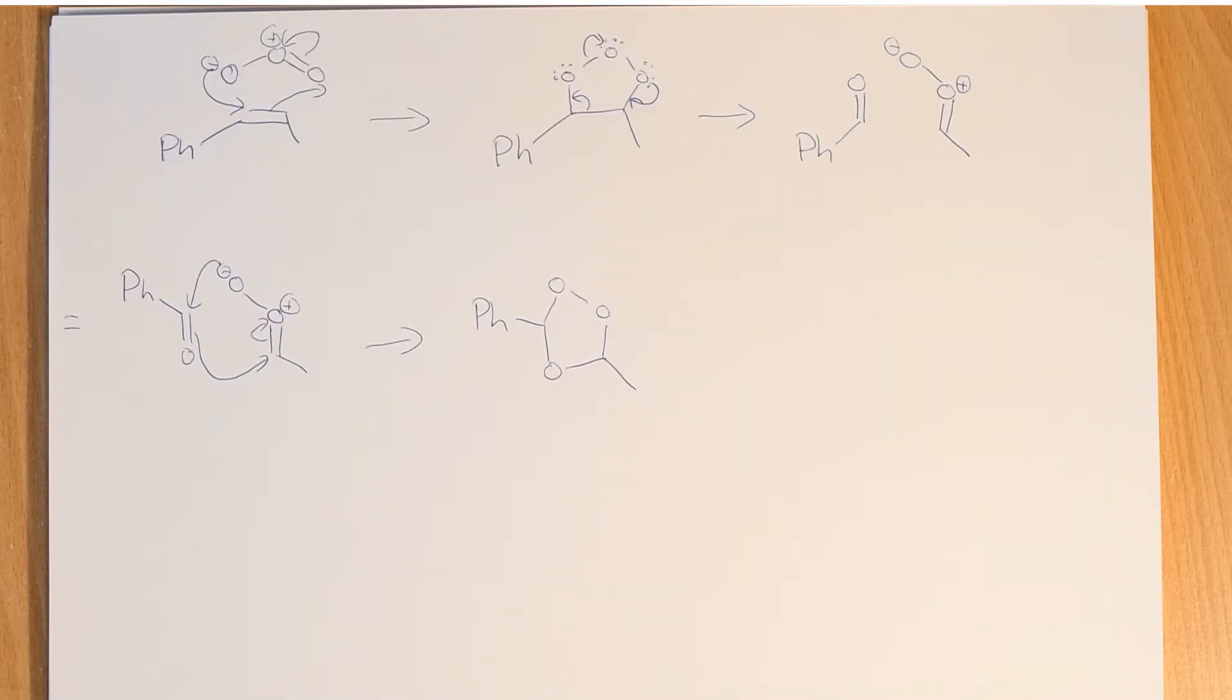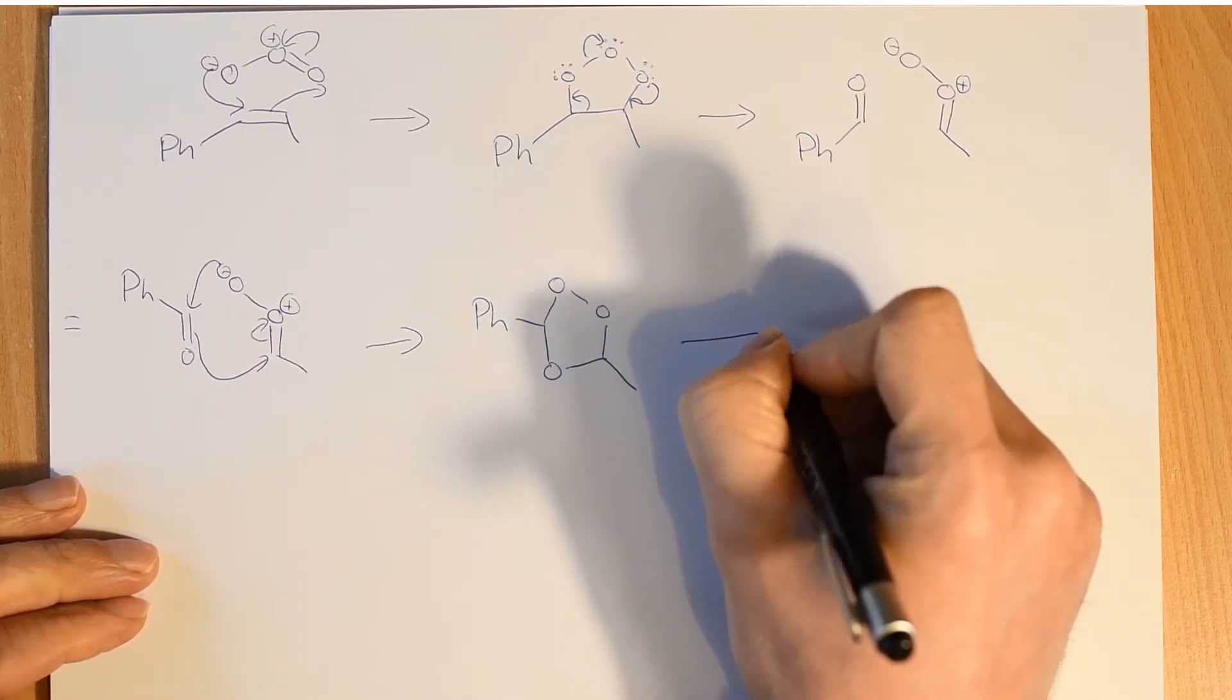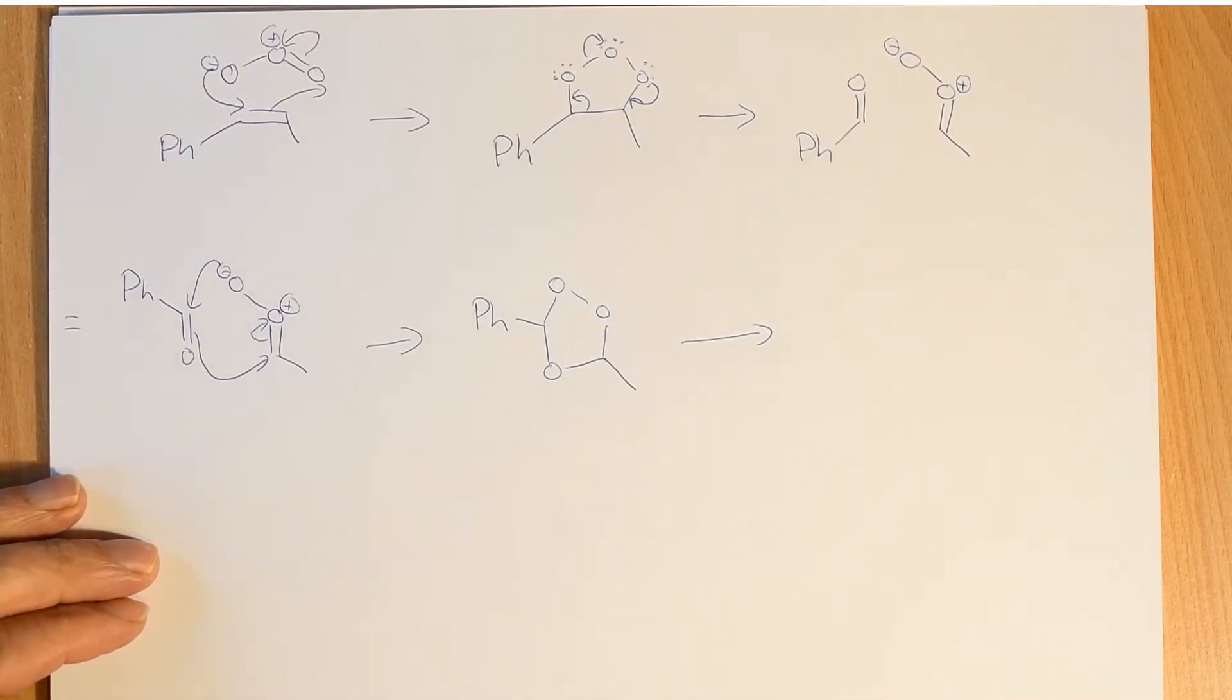But this isn't what we want as our final product. We want to be able to turn this into a pair of aldehydes, or we want to lyse the bond, as the name of the reaction suggested. So at this point, we have to put in, in order to get the aldehydes back, we have to put in a mild reducing agent.